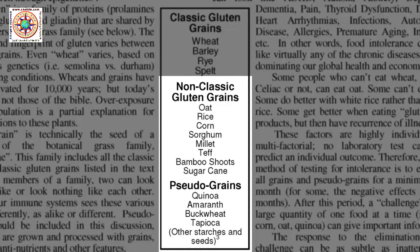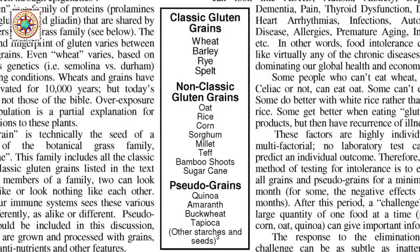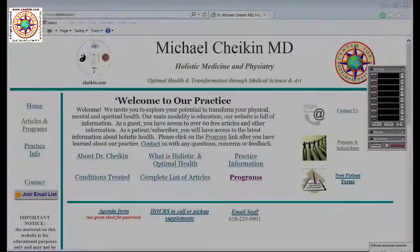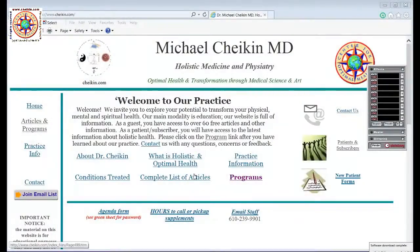Most gluten-free products will contain some of these non-classic or pseudo grains. There is huge profit in making a food with cheap corn or oat and then marking up the price 30% or more. We prefer to go with grain-free, at least for part of the elimination diet. The easiest way to achieve this is to look at paleo websites, recipes, and products at stores such as Whole Foods, where paleo in most cases means 100% grain-free.